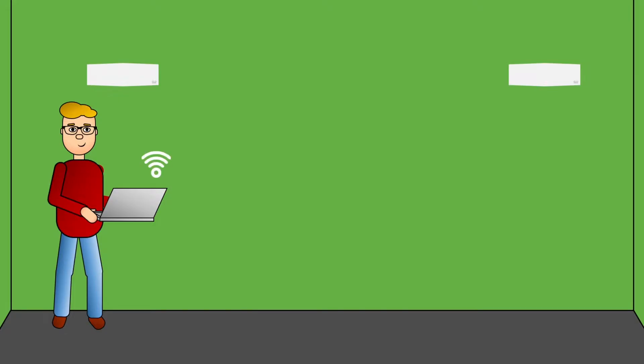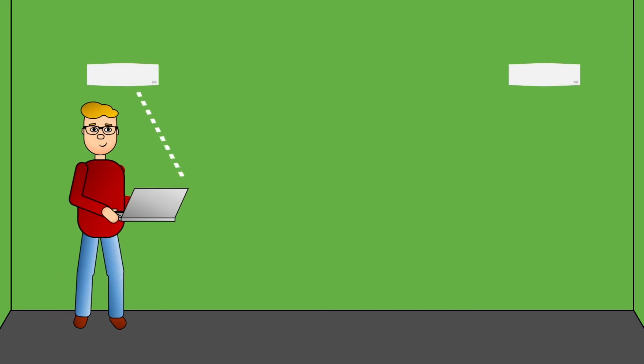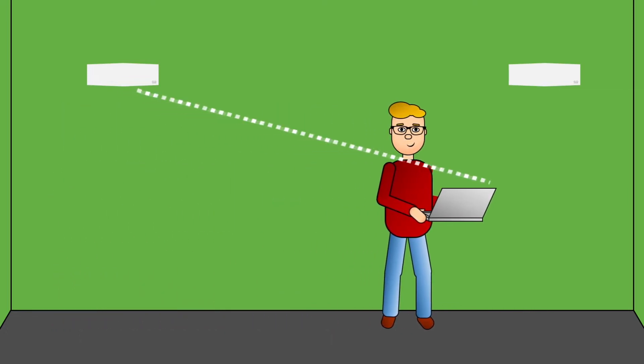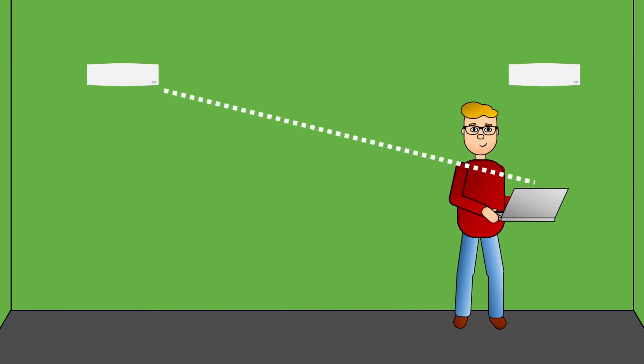Have you heard about a sticky client before? Imagine your laptop connects to access point 1, then you walk to another spot in the office, but the laptop decides to still be connected to access point 1 with decreased performance, even if access point 2 would be a much better connection point.